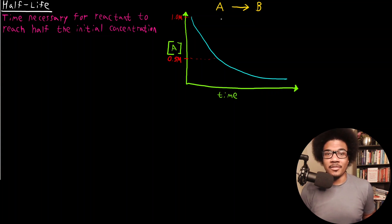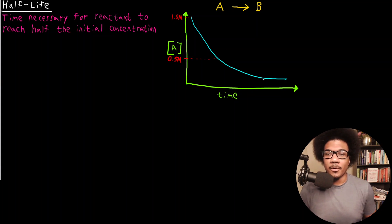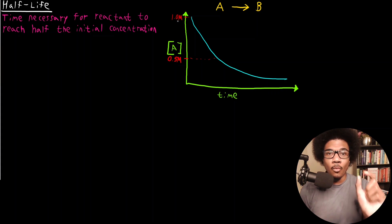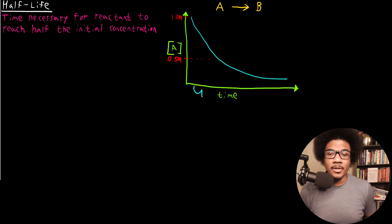Let's look at a visual representation of what the half-life looks like. If we take a general reaction where reactant A is being converted to product B, and we have a plot of its concentration over time, this blue curve shows its concentration decreasing over time as we produce more of product B. If it's starting at one molar, the half-life is the amount of time it takes for reactant A to go from one molar to 0.5 molar — this specific gap of time would be considered the half-life.